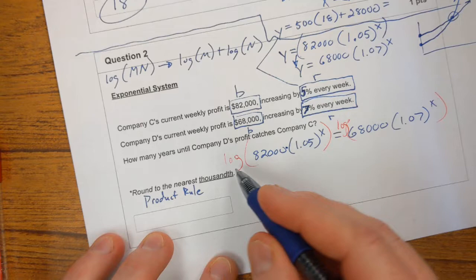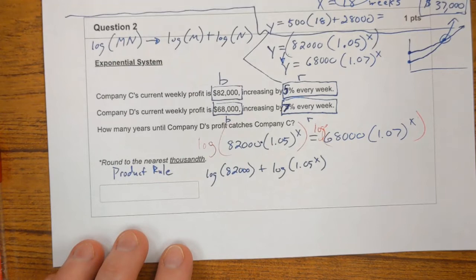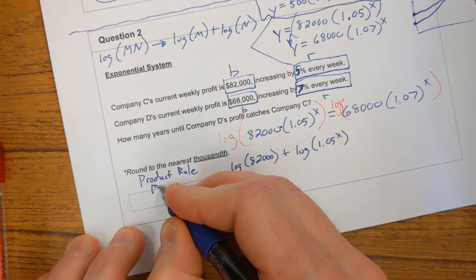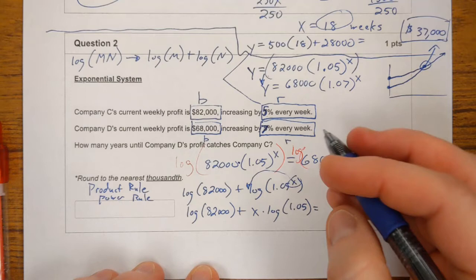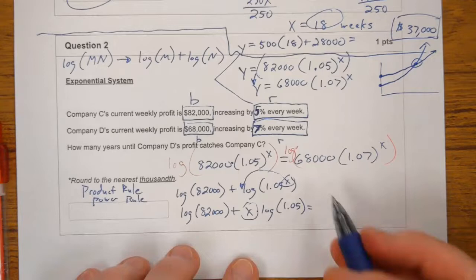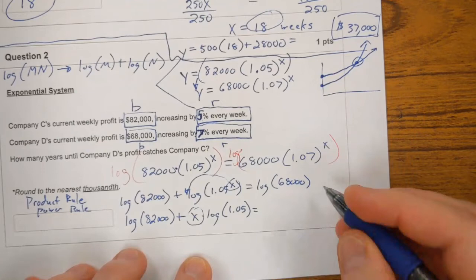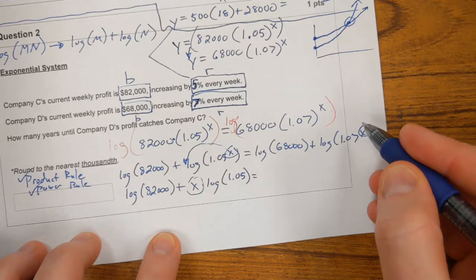If you ever have the log of like m times n, it can be rewritten as log of m plus the log of n. That's exactly what we're going to do here. Since these two things are being multiplied together, I can now write the log of 82,000 plus the log of 1.05 to the x. Furthermore, because of what's called the power rule, I can now take this power of x and basically bring it to the front here. This power rule allows us to take this power of x. If we take the log of this, it allows us to take the power of x and bring it back down to ground level. We can rewrite this as x times the log of 1.05. And over here, it's the exact same thing. We can write this as log of 68,000 plus the log of 1.07 to the x. We can do this because of the product rule. But then because of the power rule, we can now take this x and bring it in front of the log like this.